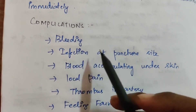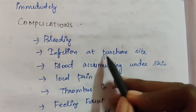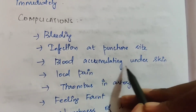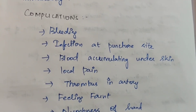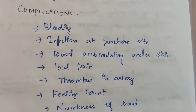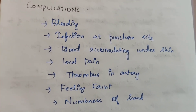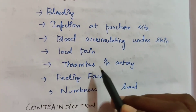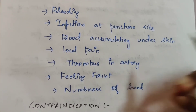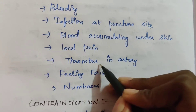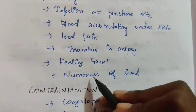Complications: bleeding at the puncture site, infection at the puncture site, blood accumulating under the skin — which may occur if the puncture angle is incorrect — local pain, thrombus in the artery if injection technique is improper, feeling faint, and numbness of the hand.